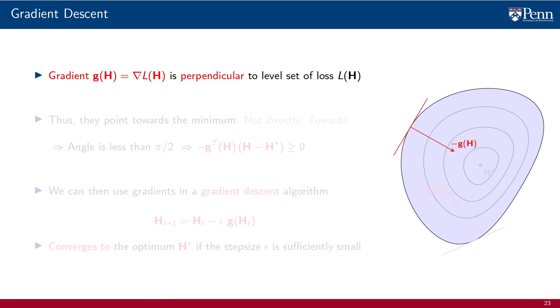As a consequence of pointing inwards of the level set, the negative gradient points towards the minimum argument h star. Not directly, by the way, towards. Kind of a rough driving direction.